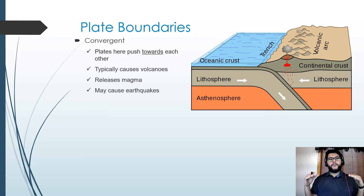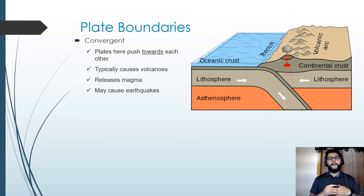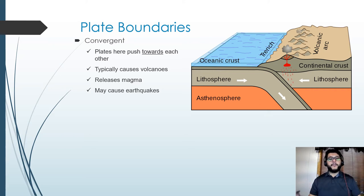Starting with convergent boundaries — those plates are pushing towards each other. When you have an oceanic plate, that oceanic crust is going to push below the other one, causing a subduction zone. That's going to cause volcanoes and release a lot of magma. You can see in the diagram that the crust is being pushed down, and as it melts that leads to magma coming up.